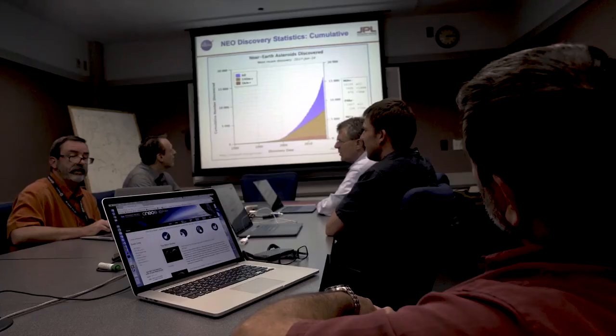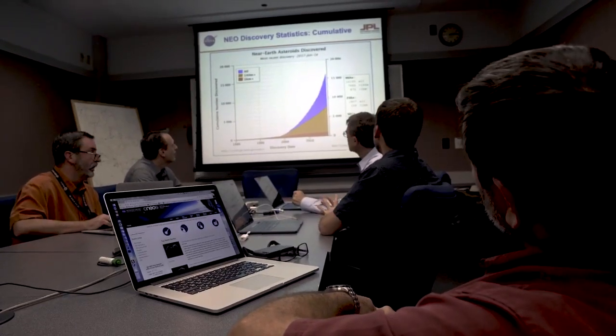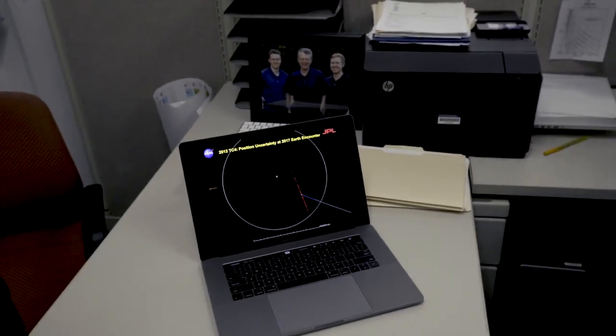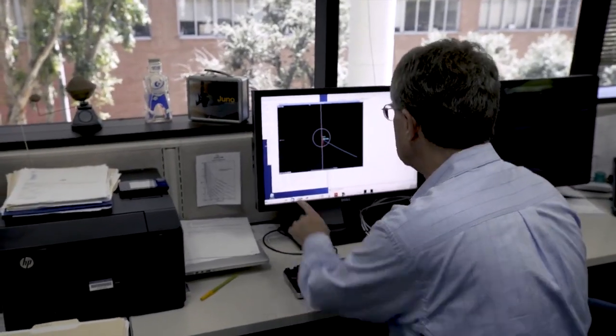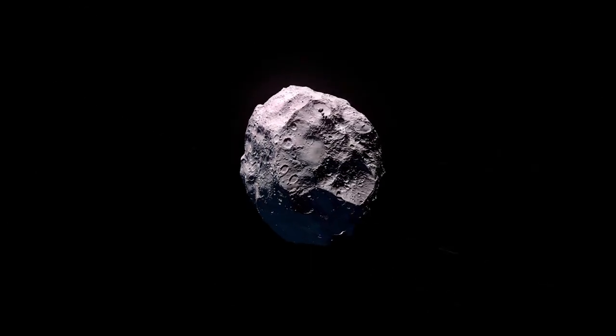CNEOS is also kind of an early warning system for newly discovered asteroids. We take the early data and we compute whether or not that asteroid could hit the Earth. If there's a chance, we'll send out an early warning and alert for follow-up observations so that we can get more data and then we would know whether it can hit the Earth or not.